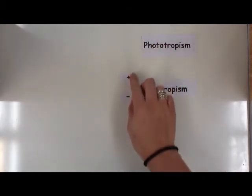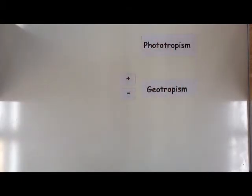We also can have positive and negative geotropism. Positive geotropism is when the plant roots go towards the force of gravity and then negative geotropism is when the plant grows away from the force of gravity which would usually include the shoot part of the plant.